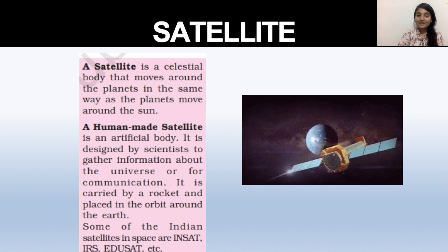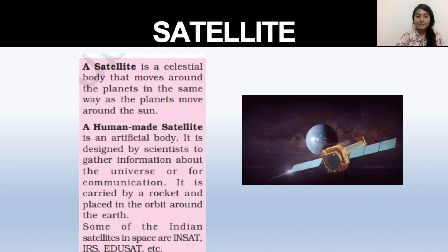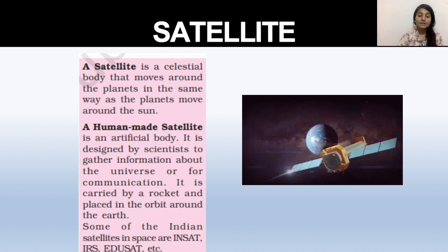Next is satellites. There are two types: natural satellites like the Moon, and human-made satellites. Natural satellites are celestial bodies. Human-made satellites are built to gather information from the universe — used for communication, weather forecasting, and more. Famous Indian satellites include INSAT and EDUSAT.